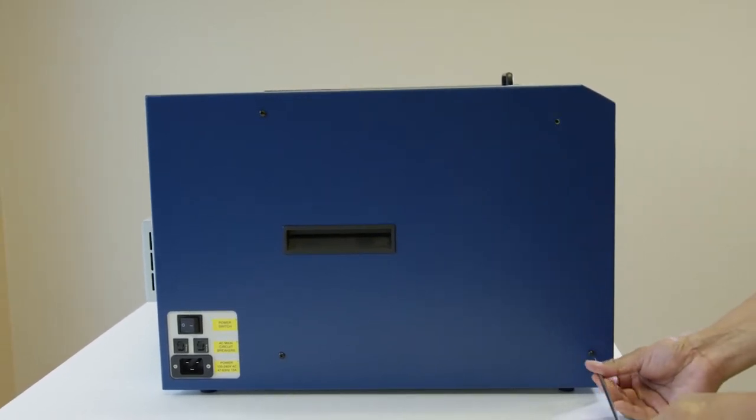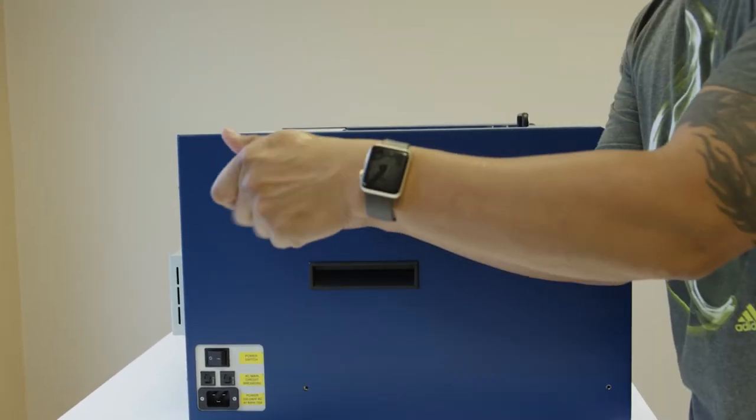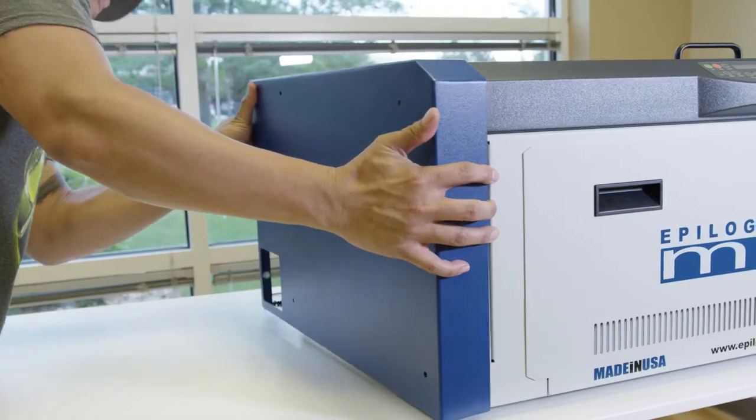Remove the left side panel by removing the four Phillips head screws on the side of the machine and the two screws on the back of the machine.